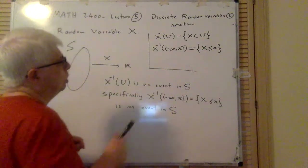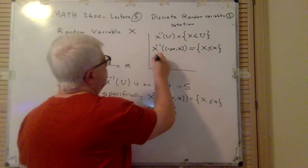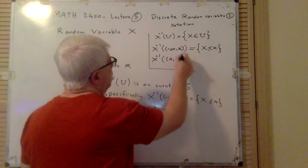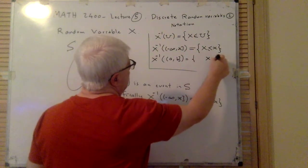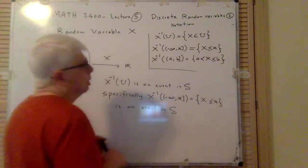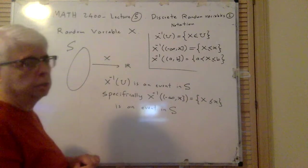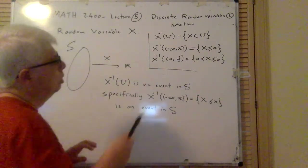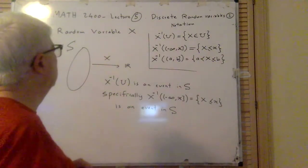We will be dealing with things like this. Another one would be X inverse of, say, (a, b], that is, we say X is less than or equal to b and greater than a. X is a function, but this is just notation. This notation makes a lot of sense and we will see that in a moment.